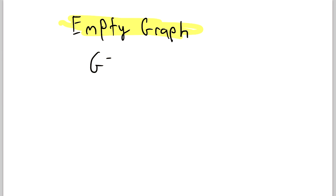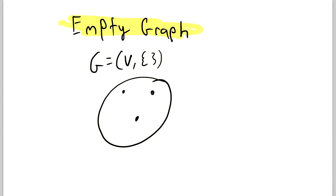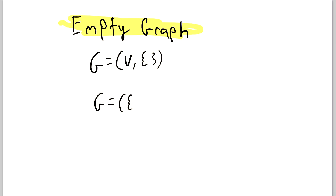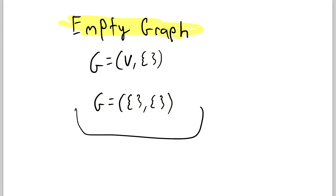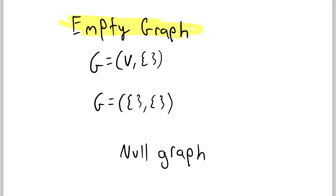One other thing I want to talk about is the empty graph. An empty graph is any graph that has an empty edge set — an ordered pair with some vertex set and an empty edge set. It has vertices but no edges. That is allowed and we call such graphs empty graphs. If the graph has no vertices either — an empty vertex set and an empty edge set — this is sometimes considered a graph and sometimes not, depending on the author. If it is considered a graph, it's referred to as the null graph, which is the empty graph with zero vertices.